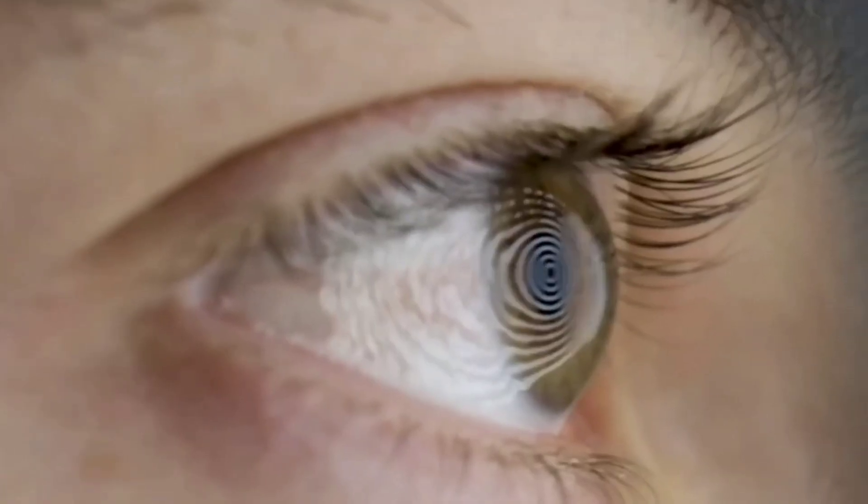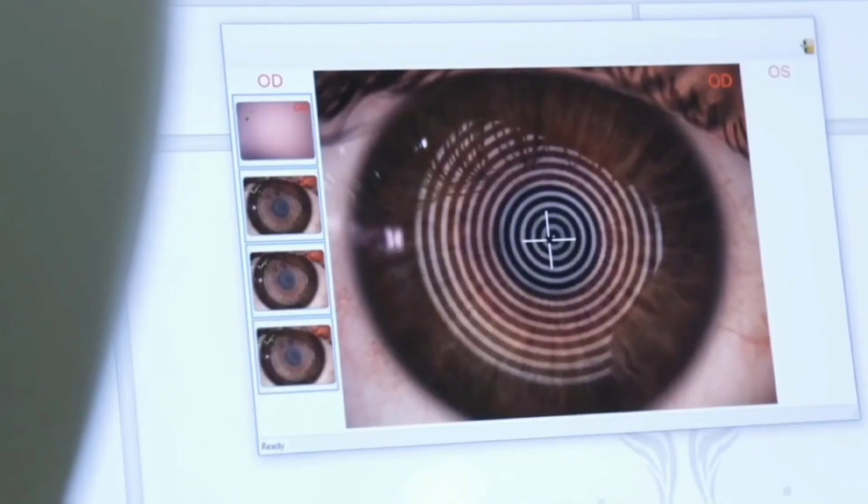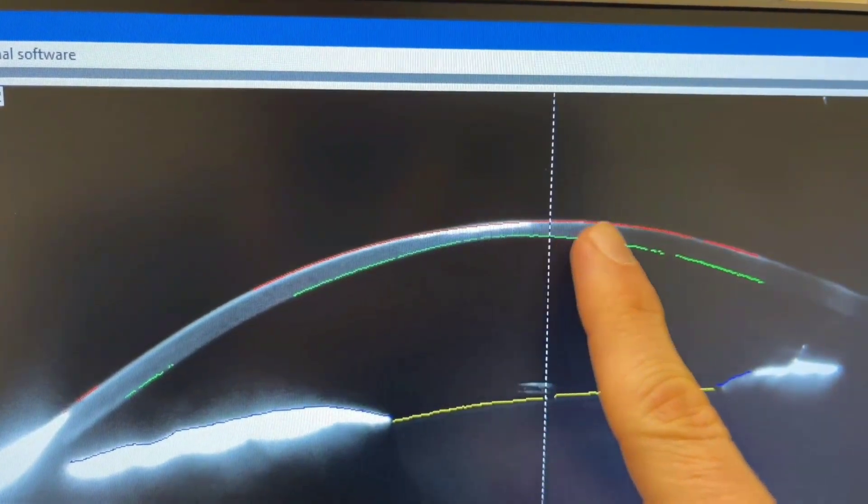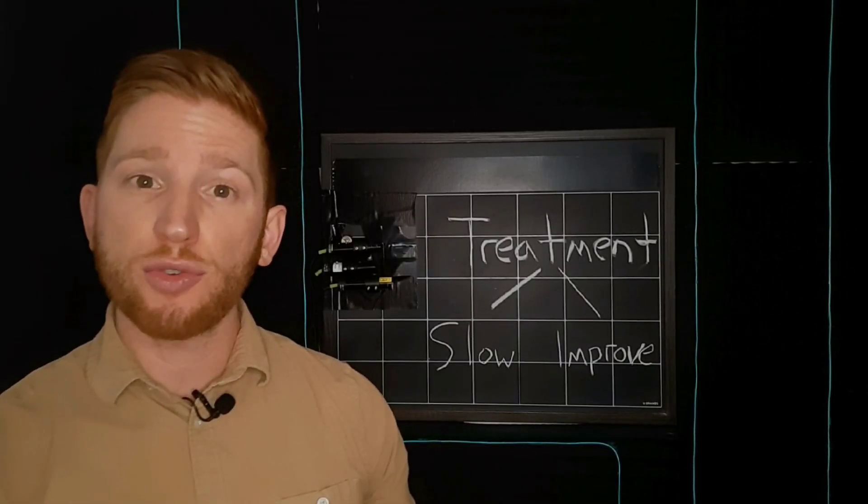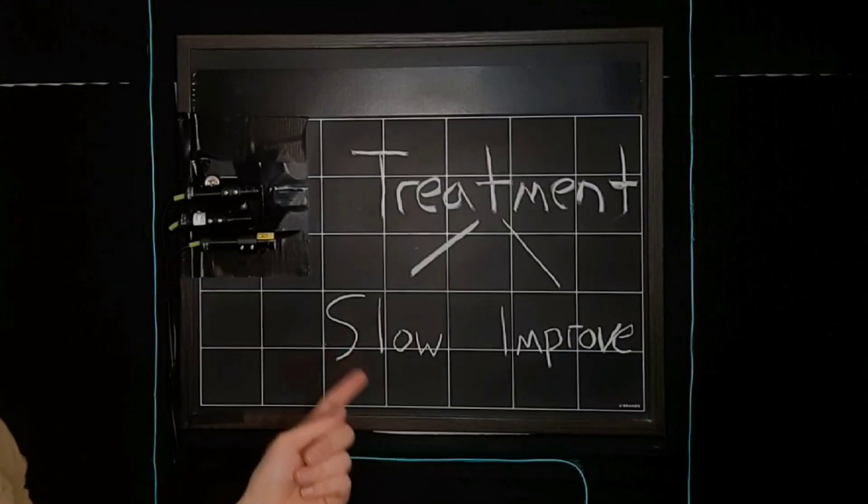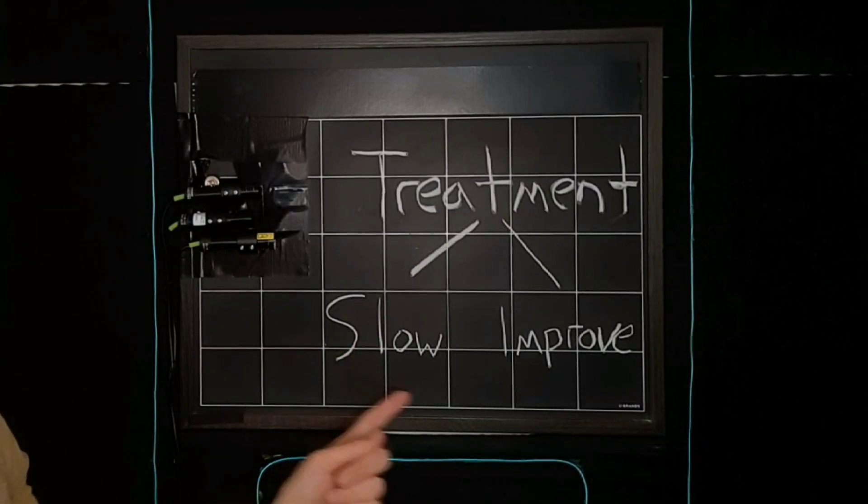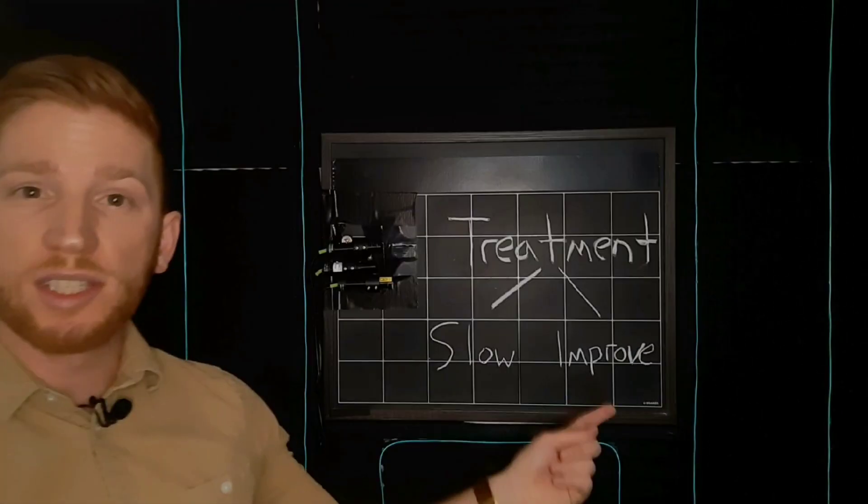When you visit your eye doctor, they'll check for Keratoconus by measuring changes in your vision and examining your cornea. The best ways to treat this depend on the severity of your condition, and treatments are broken down into either slowing down the development of Keratoconus or improving your vision once you have it.